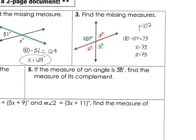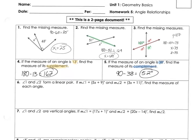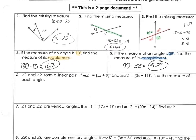We come over here at number 5. The first measure is 38 and they are complementary. Remember, that's in the groups. Any questions about that?